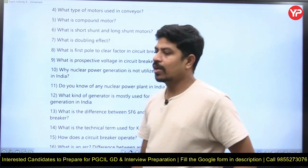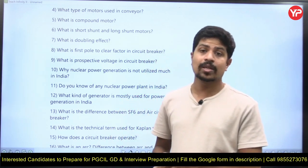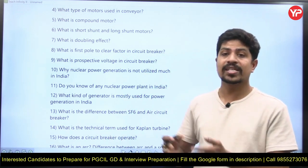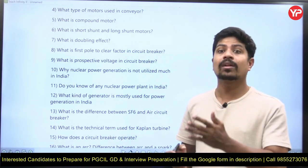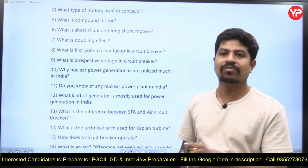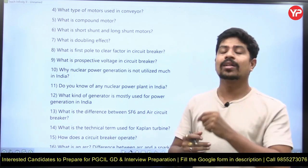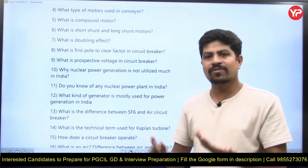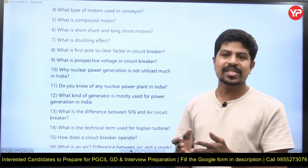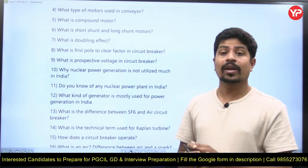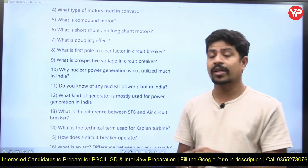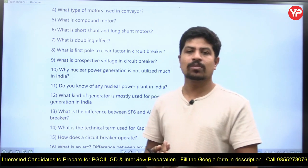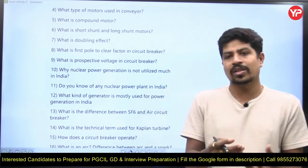What is doubling effect? In power systems fault analysis, the initial fault current is almost double that of the steady-state fault current. If the steady-state fault current is If, during starting the fault current is 2×If — that is called the doubling effect. What are the reasons for doubling effect? The circuit breaker and relay must be designed based on the doubling effect current, not the steady-state fault current.